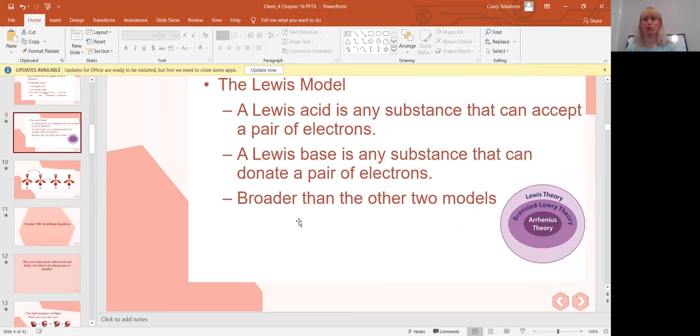The last major model that we're talking about is the Lewis model. It goes back to the idea of Lewis structures. The Lewis model says a Lewis acid is any substance that can accept a pair of electrons. A Lewis base will donate a pair of electrons. This is much broader than any of the other two models. If you look at this circular modeling, the Arrhenius theory is a much tighter definition than the Bronsted-Lowry theory, which is a little bit of a tighter definition than the Lewis theory. Lewis is the broadest and encompasses the most. Bronsted-Lowry is the one in the middle, and Arrhenius is the most specific and the most limiting definition.